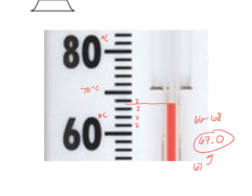That situation — a measurement landing exactly on a line — will come up maybe 5% to 10% of the time. No matter what the scale of the instrument is, if you think it's on the line, the last digit you estimate should be zero. Don't leave off the zero, because that means you didn't measure it properly. Anyway, this is the video lesson for proper measurement technique. Thanks for listening.